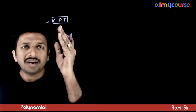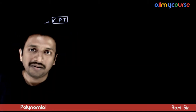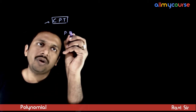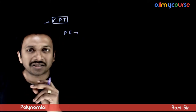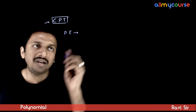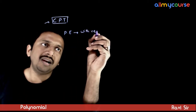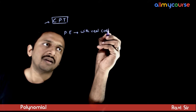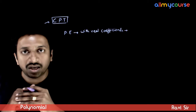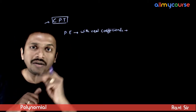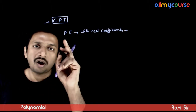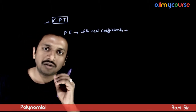We have a theorem called the Conjugate Pair Theorem, which states that if a polynomial equation has all of its coefficients as real numbers — that is, a polynomial equation with real coefficients — then the nonreal complex roots of this polynomial equation always occur in conjugate pairs.